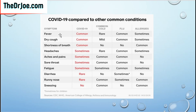Let's look at fever, for instance. Fever is common to COVID-19 and it's also common in flu. Dry cough is common in COVID-19 and also common with flu. But here's where things begin to distinguish themselves: shortness of breath is common in COVID-19 but not common in flu. So this is a distinguishing feature — shortness of breath.